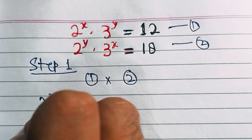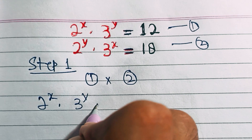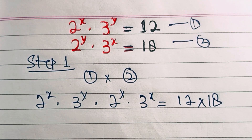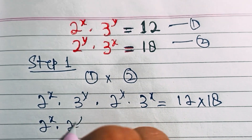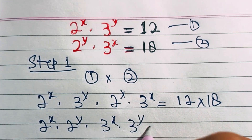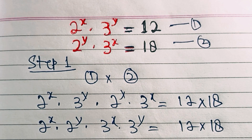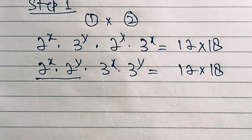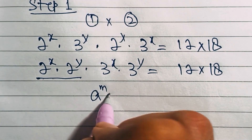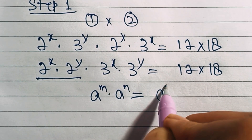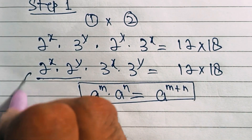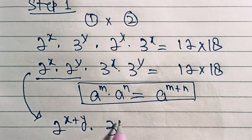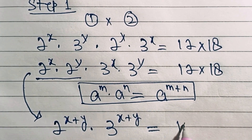That is: 2^x times 3^y times 2^y times 3^x equals 12 times 18. We can rewrite this as 2^x times 2^y times 3^x times 3^y equals 12 times 18. We have same bases with different exponents, so we use the formula a^m times a^n equals a^(m+n). This gives us 2^(x+y) times 3^(x+y) equals 12 times 18.